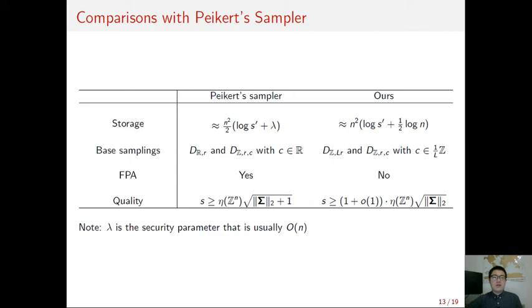With such an integral gram root, we can adapt Peikert's sampler to an integer version. This is the comparison between our sampler and Peikert's one. We can see our algorithm achieves simultaneously better storage. That is because in Peikert's sampler, it requires storing a Cholesky root, and the coefficients in this matrix require a precision about lambda B, where lambda is the security parameter that is also set as big O of n. Also, the base samplings in our algorithm are easy to implement, and no floats are used in our algorithm. The quality of final Gaussian remains almost the same as the one in Peikert's approach.